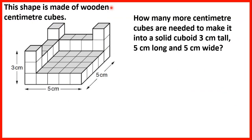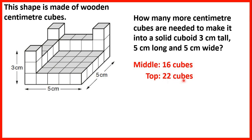This shape is made of wooden centimetre cubes. How many more centimetre cubes are needed to make it into a solid cuboid 3 centimetres tall, 5 centimetres long, and 5 centimetres wide? We think about how many more cubes are needed on each row. For the middle row we need 16 cubes because we have a 4 by 4 space. For the top row we need another 22 cubes: 16 above the middle layer plus 6 more around the edge. So 22 plus 16 means we need another 38 cubes altogether.